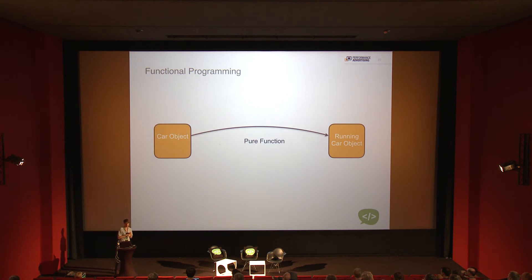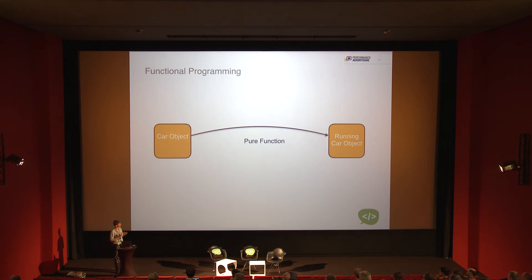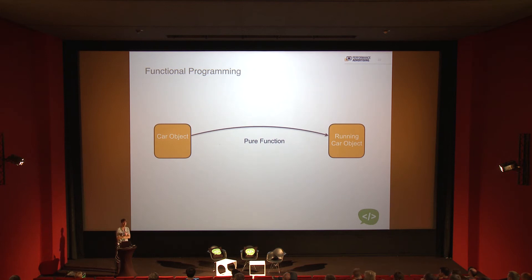A pure function should also have no dependency on external state — no global variable telling it how long to wait before the car starts. Everything is encapsulated inside the function. Functional programming holds that many program errors come from side effects. If your functions are pure, it's very unlikely you'll have error problems, which is why functional programming avoids tons of parallelization issues you'd otherwise have syncing state between CPU cores or different machines.